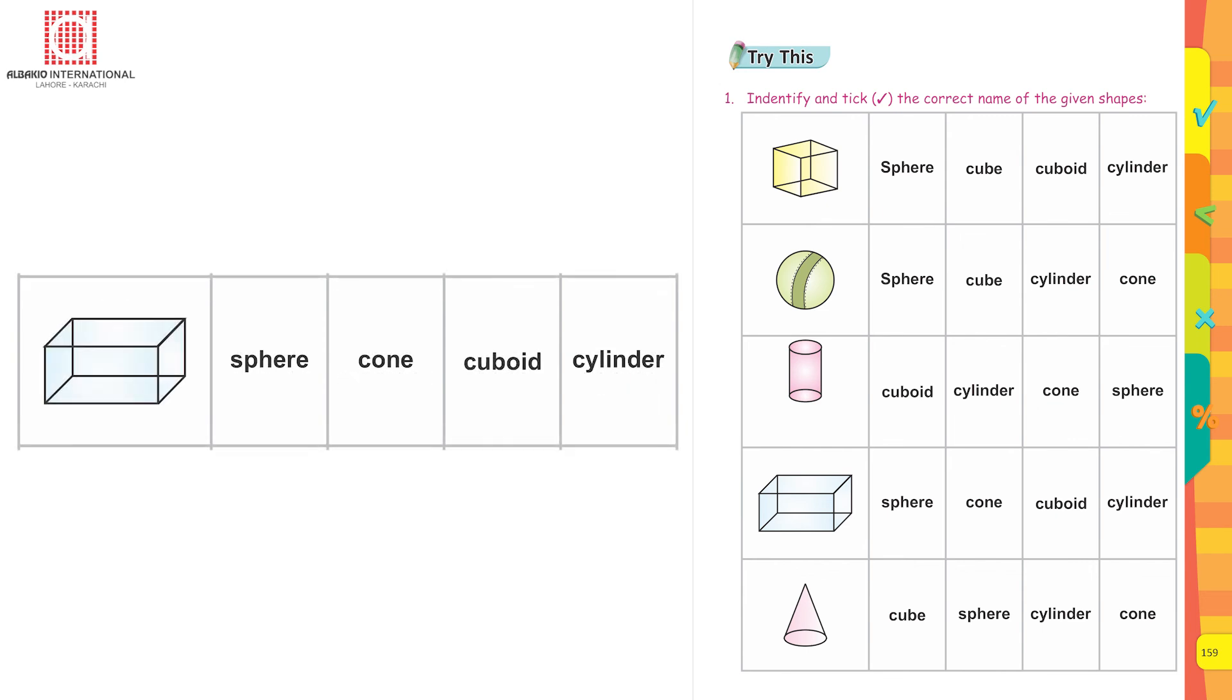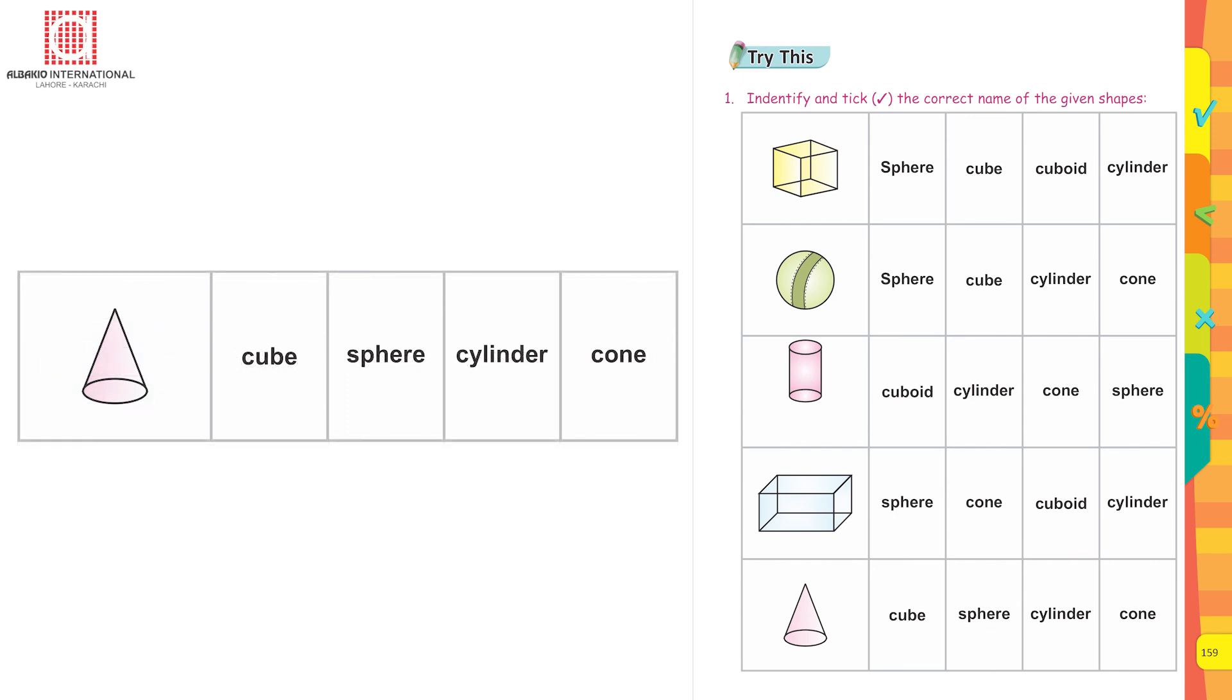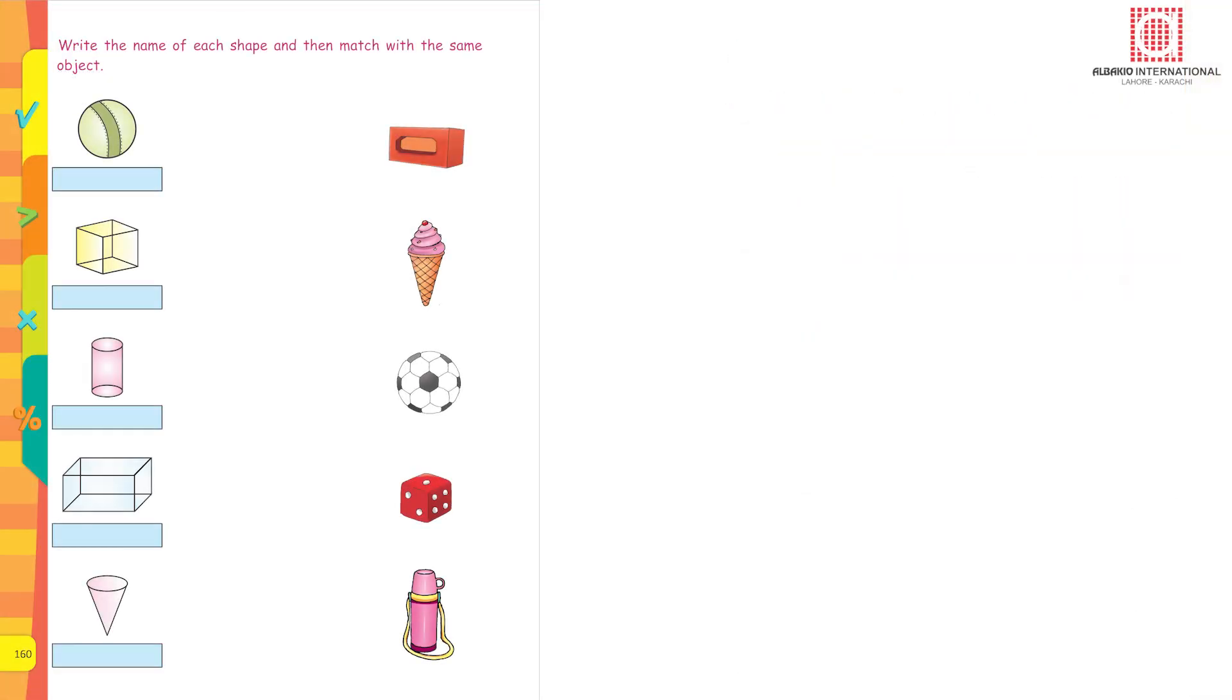The fourth one is a cuboid because its faces are rectangular in shape. Lovely, great! This is a party cap. Its shape is like a cone, exactly. Now write the name of each shape and then match with the same object. Now I'm sure you can do it on your own.